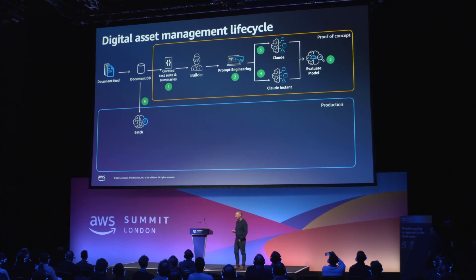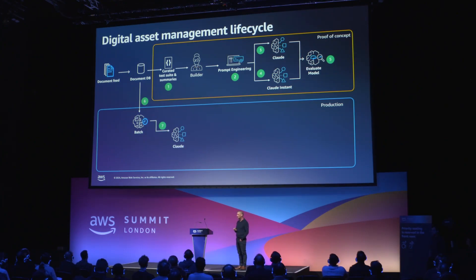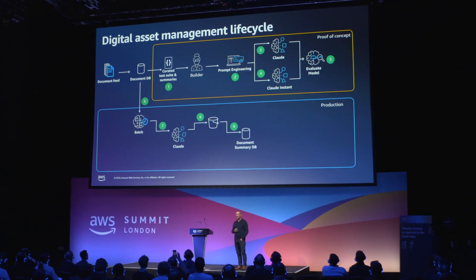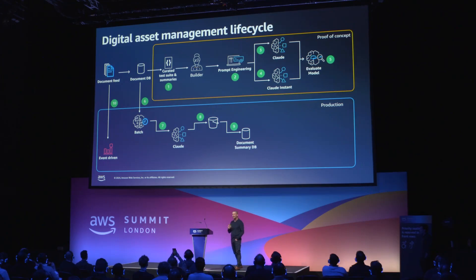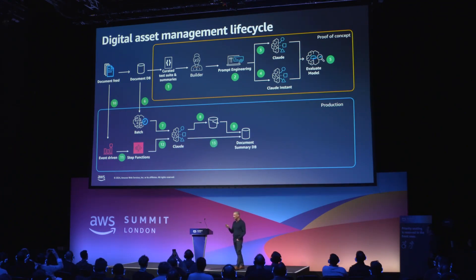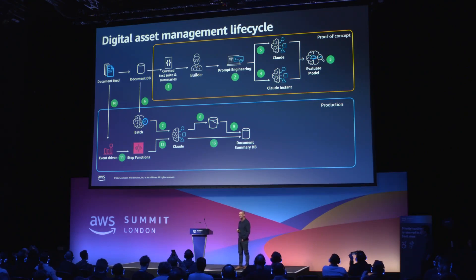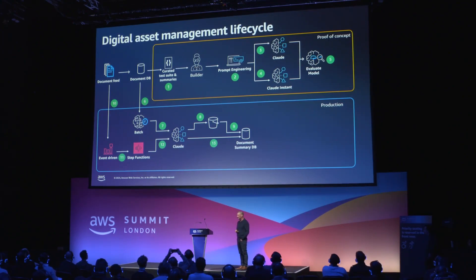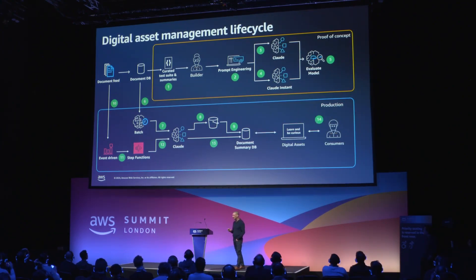Typically this will be a batch process, not necessarily inference, which you put through your models at scale to generate your overall content. But you're also going to have feedback mechanisms in place, and those feedback mechanisms may be event-driven to also update or create content to put it through your model into your store. This is where you may introduce workflows and step functions in terms of sequencing, and this gives you your content which your consumers can then search and manage against.